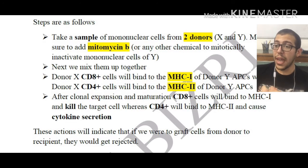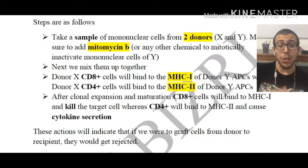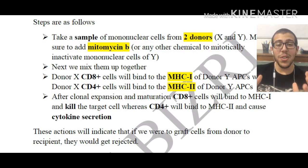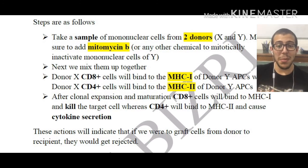These actions will indicate that if we were to graft cells from a donor to a recipient, they would get rejected. This concludes today's episode of transplantation immunology. This has been Ali from BBiology.